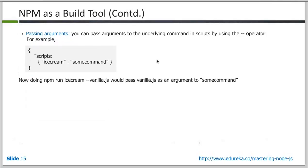You can also pass arguments to your scripts using the double-hyphen operator. Someone asked if hooks are part of scripts — yes, hooks are part of scripts. You can run a script like npm run ice-screen -- vanilla.js, and vanilla.js will get passed as an argument to the command. You can do npm run followed by the name of the script and then pass in an argument. As I mentioned, when working with the MEAN stack and our own package.json for setting up the base package, we're going to use these commands for building the application.